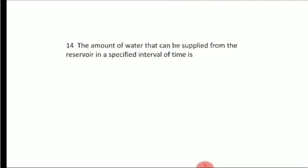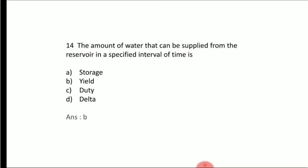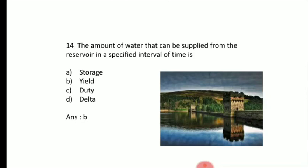The amount of water that can be supplied from a reservoir in a specified interval of time — Option A: storage, Option B: yield, Option C: duty, Option D: delta. The answer relates to the amount of water that can be supplied from a reservoir.